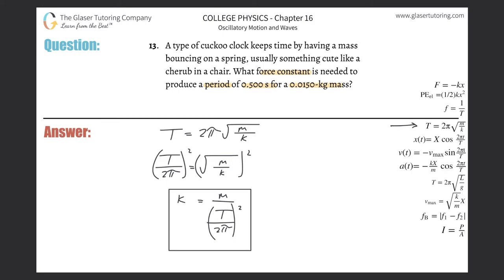The mass is 0.015 as they mentioned, the period is 0.5 seconds, divided by 2π. Don't forget to square the denominator, and let's do it.